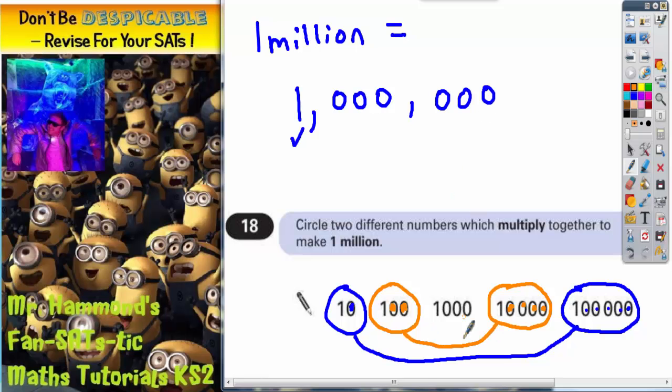So there's either of those two possible answers. You can either circle ten multiplied by one hundred thousand to make a million or one hundred multiplied by ten thousand to make a million.